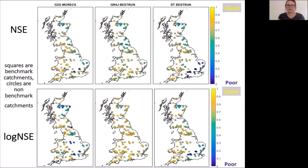In terms of the results: in the top panel you have Nash-Sutcliffe efficiency, where each point represents a gauge. Yellow denotes good model performance and blue denotes poor model performance. Squares are benchmark catchments — catchments believed to be not as heavily impacted by human influences — and circles are non-benchmark catchments.